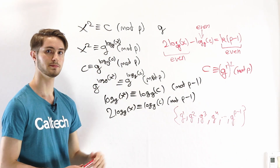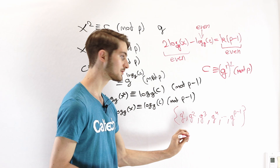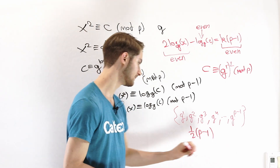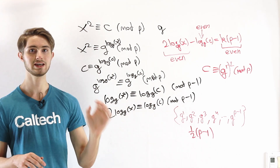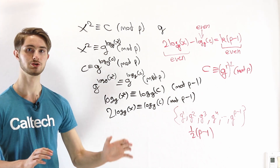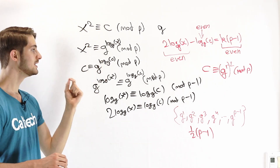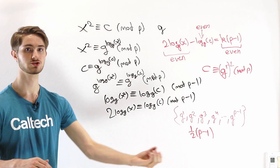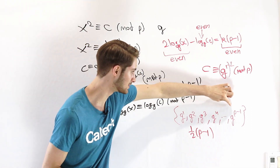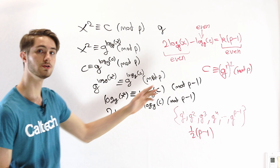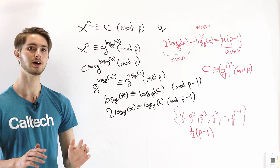Half of the numbers have even index, so the number of quadratic residues is one half of p minus 1, and this is true for any odd prime p. In summary, a number is a quadratic residue mod a prime p if and only if it has an even index relative to a primitive root mod p. Using the fact that half of all powers of the primitive root have even exponents, there are always exactly one half of p minus 1 quadratic residues mod any odd prime p.